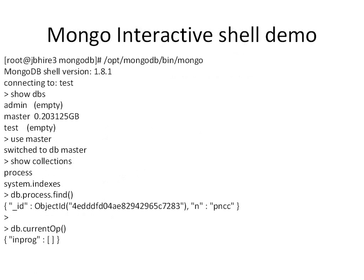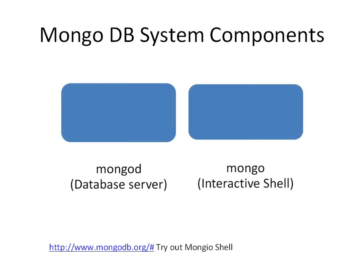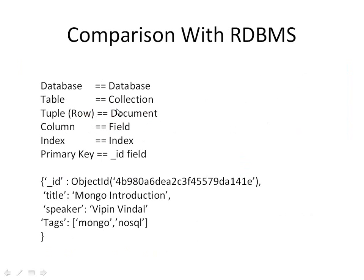Now let's do a comparison with relational databases, starting with terminology. In relational databases what we call a database is also called a database in MongoDB. What we call a table in relational databases is actually a collection in MongoDB. What we call a row is actually a document in MongoDB, and what we call a column is called a field.